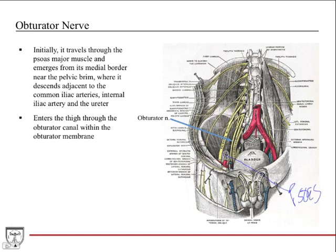This is more the distal part of the psoas that ends up going down into the thigh and inserting onto the lesser trochanter. It travels through the psoas muscle — a good landmark in the cadaver lab — and emerges from the medial border near the pelvic brim. Then it descends adjacent to the common iliac. Here's the aorta branching into the common iliacs, with the obturator nerve traveling just adjacent to those, along with the internal iliac and the ureter.